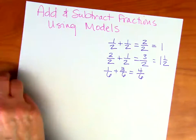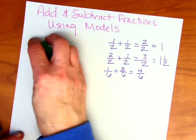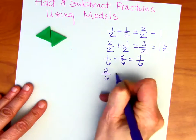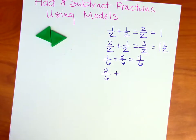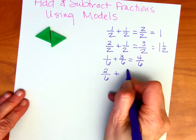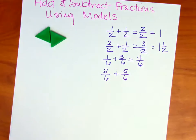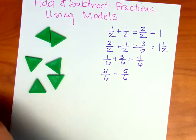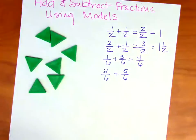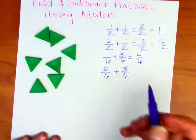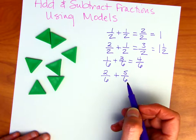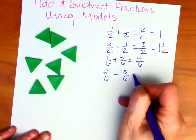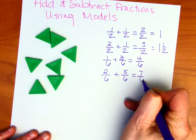Let's say we have two-sixths and I want to add to that five-sixths. So five-sixths. Let me get these on the paper — there's two, three, four, and then five. So how many sixths do I have? Well, I have one, two, three, four, five, six, seven. I have seven-sixths.